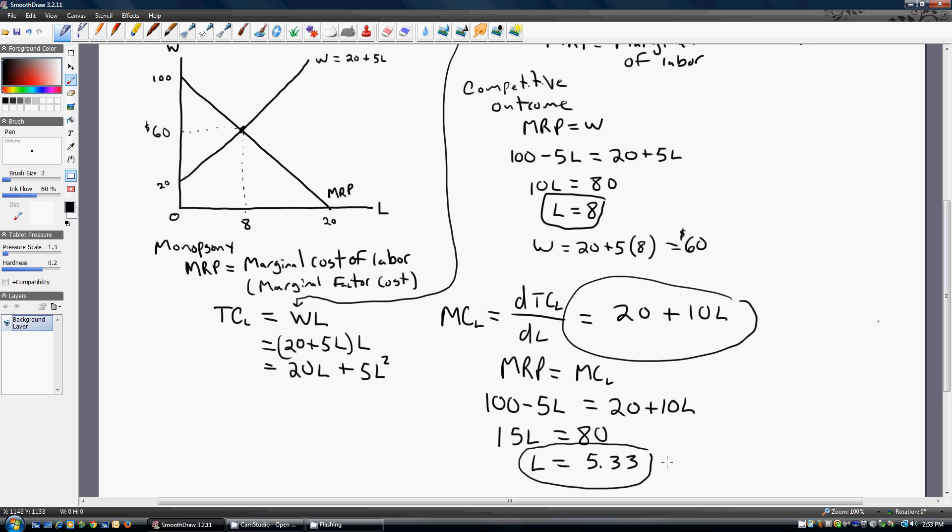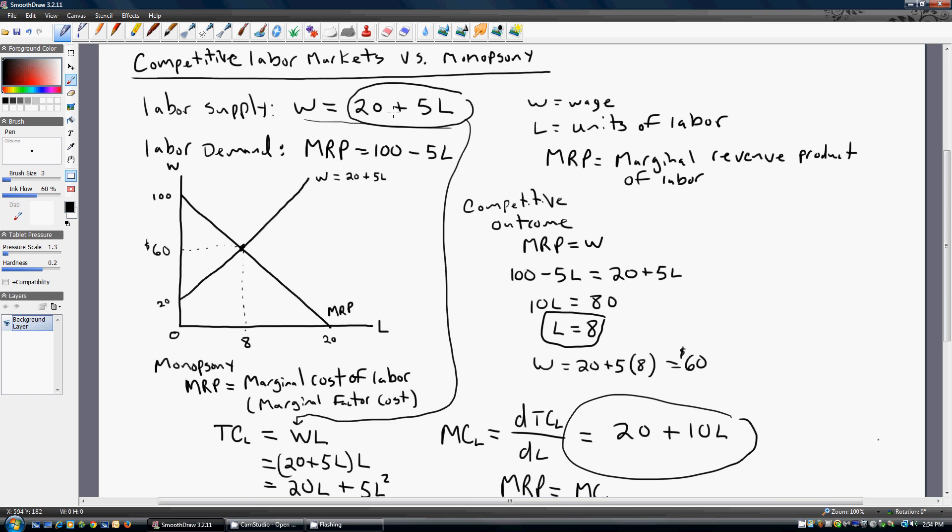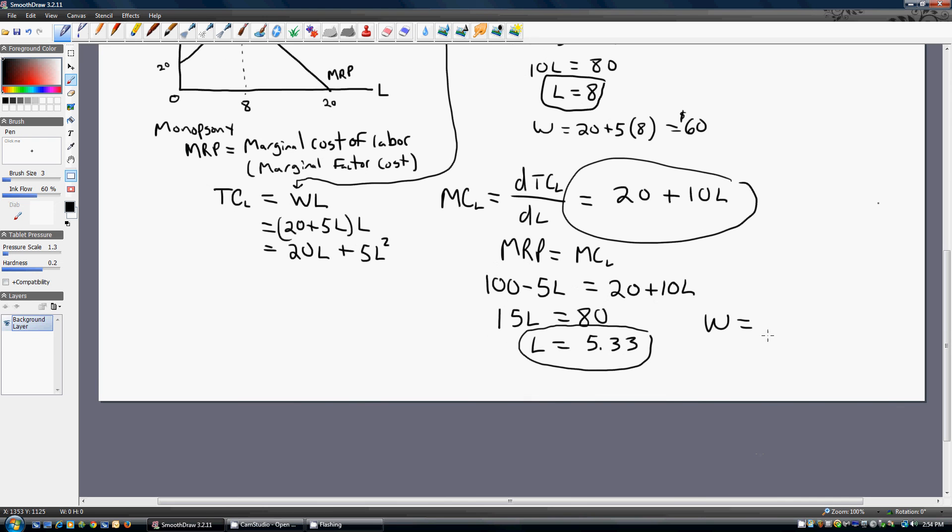And monopsonies, you may have learned, will restrict hiring in order to keep wages artificially low. So what is the wage? The wage is going to be plugging this 5.33 back into the labor supply equation. Okay, we're going to take that 5.33 and plug it back into the labor supply equation, which was 20 plus 5L. What is L? 5.33. We get a wage of $46.67. That is the monopsonist wage.